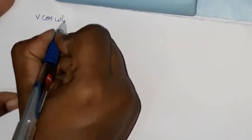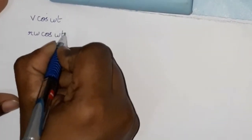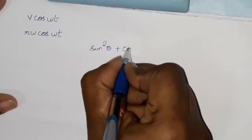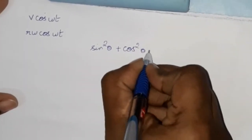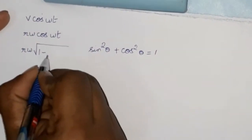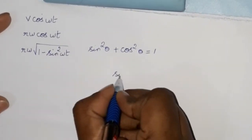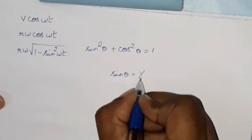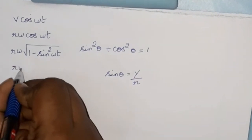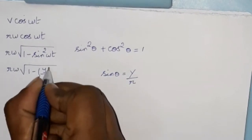V equals r omega cos(omega t). But we have the expression sin²θ + cos²θ = 1. So by using this, r omega root over 1 minus sin²(omega t). But we already know that sin θ equals y by r. So r omega root over 1 minus (y/r) whole square.